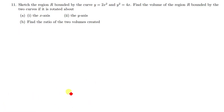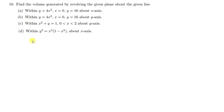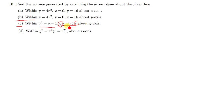Moving on to part C — this is a continuation of the previous part. We move from part B to part C. Part C is asking us to work within this region, and these are just limits — don't let them confuse you. This is the limit from 0 to 2, and then about the y-axis. Since it's about the y-axis, the limits are supposed to be in terms of y.